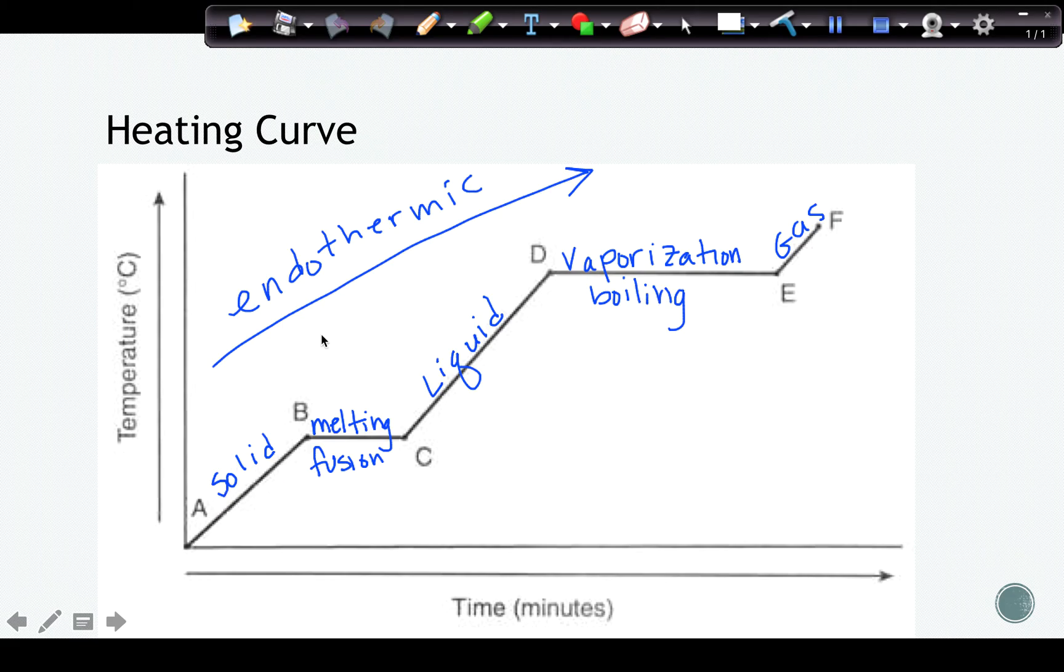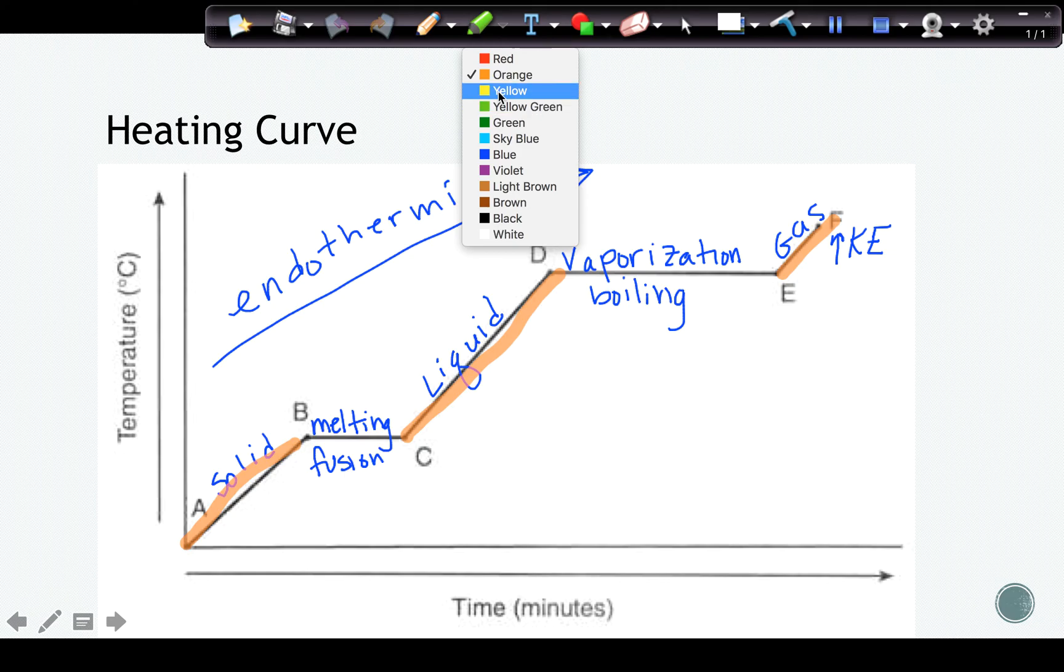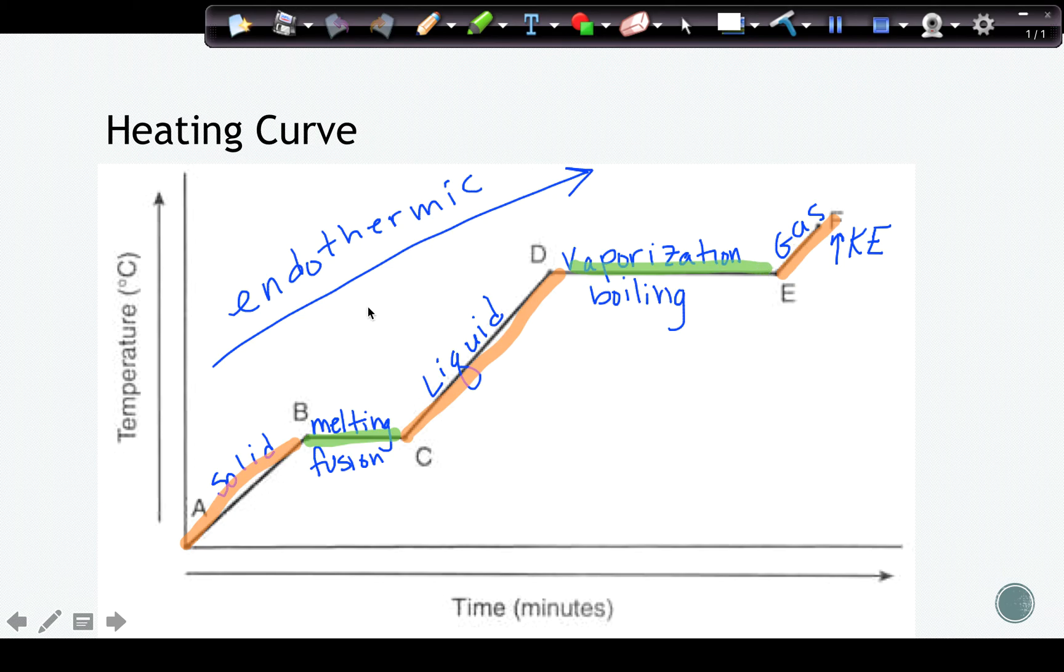Notice that each of the slanted lines has an increase in temperature. So any time we have an increase in temperature, we have an increase in kinetic energy. That goes for each of the three slanted lines. So here, here, and here, there's an increase. Each of the orange lines is an increase in kinetic energy. And then when it's flat, the temperature is not changing. So the temperature and the kinetic energy are staying constant. But at a phase change on the heating curve, we have an increase in potential energy. So potential energy changes at a phase change. Kinetic energy can only change when we're in a single phase.